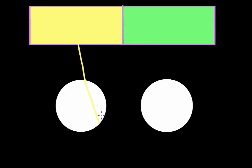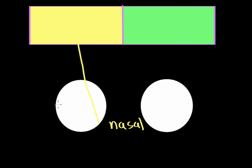The inner side of the eyeball — the side of the left eyeball closest to the nose — is known as the nasal side, because the nose is right in the middle of the eyes. The outside part of the eyeball, closest to your temple, is known as the temporal side. So the nasal side is closest to the nose, and the temporal side is closest to the temples.